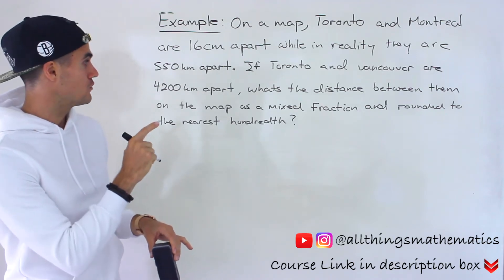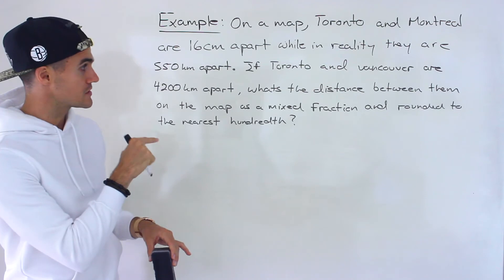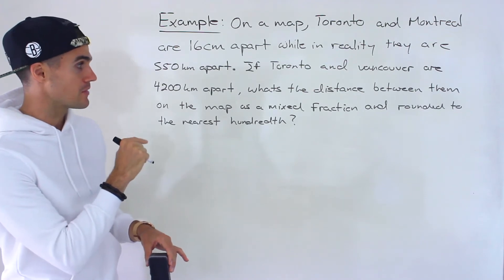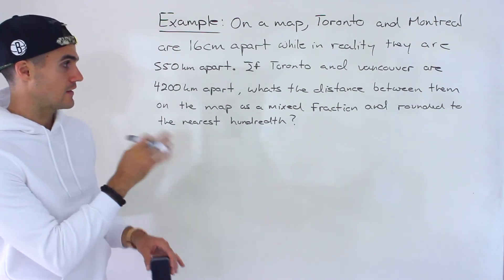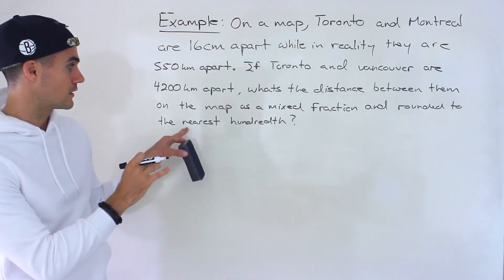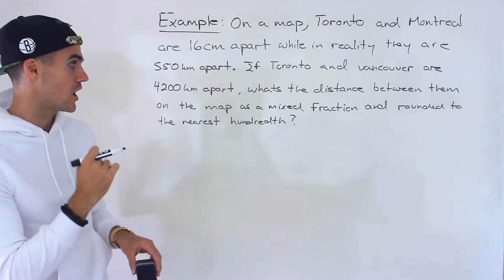If Toronto and Vancouver are 4,200 kilometers apart, what's the distance between them on the map? We have to give our final answer as a mixed fraction and then also as a decimal where we're going to round it to the nearest hundredth.